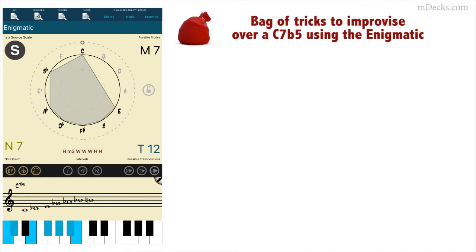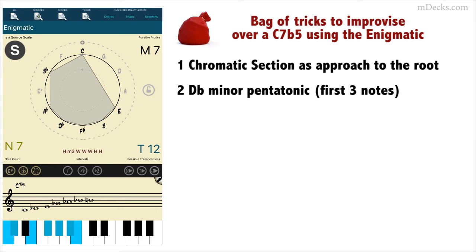So now we have a bag of tricks we can use to create a solo over a C7 flat 5 using the enigmatic scale. Here are the ones I've chosen to use for my solo. 1. The chromatic section of the scale as an approach to the root. 2. The D-flat minor pentatonic. I will use only the first three notes. Remember at the beginning of the video where we found the cool D flat E G flat pattern that sounded outside and resolved weirdly to the C note? I'll add that to my bag of tricks for this solo.